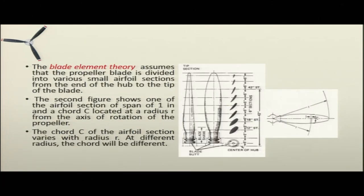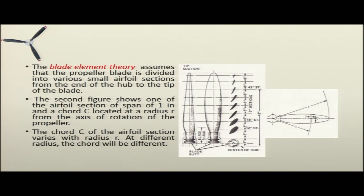The blade element theory assumes that the propeller blade is divided into various small airfoil sections from the end of the hub to the tip of the blade. Here in the figure, one blade is shown divided into various sections. One airfoil section has a span of 1 inch and a chord C, located at a radius R from the axis of rotation of the propeller. The chord C of the airfoil section varies with radius R.